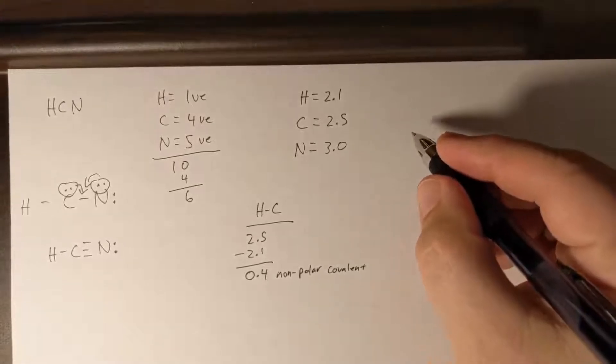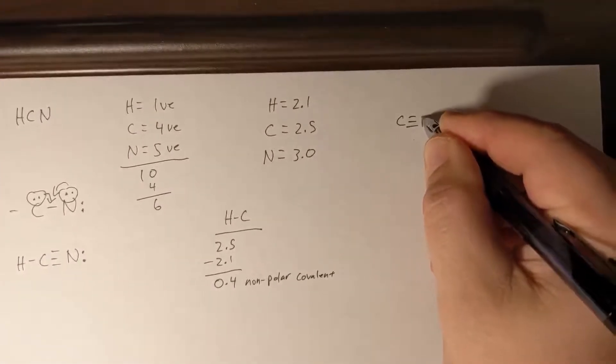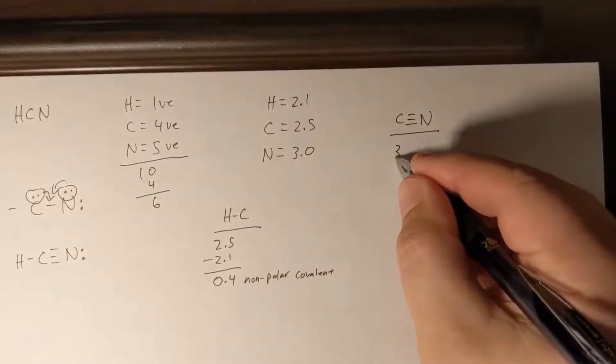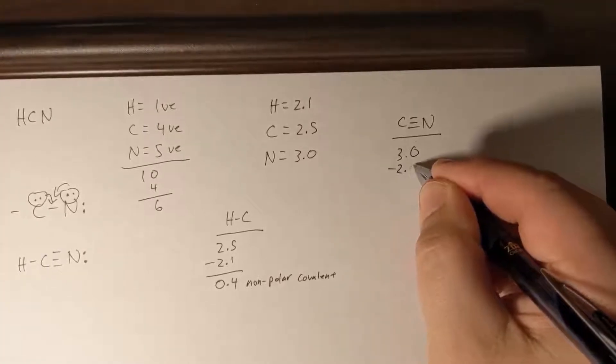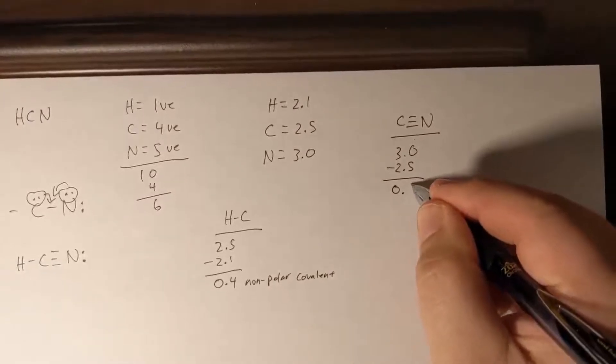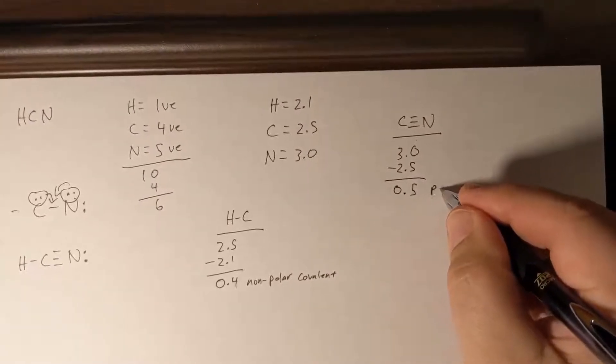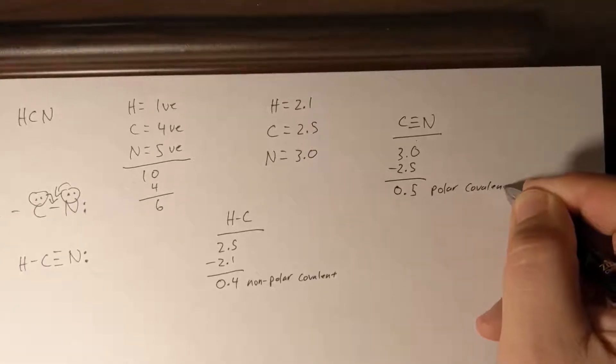Now we can also do our carbon-nitrogen bond. The 3.0 is our value for nitrogen minus 2.5, our value for carbon, would give us 0.5. And so this is polar covalent.